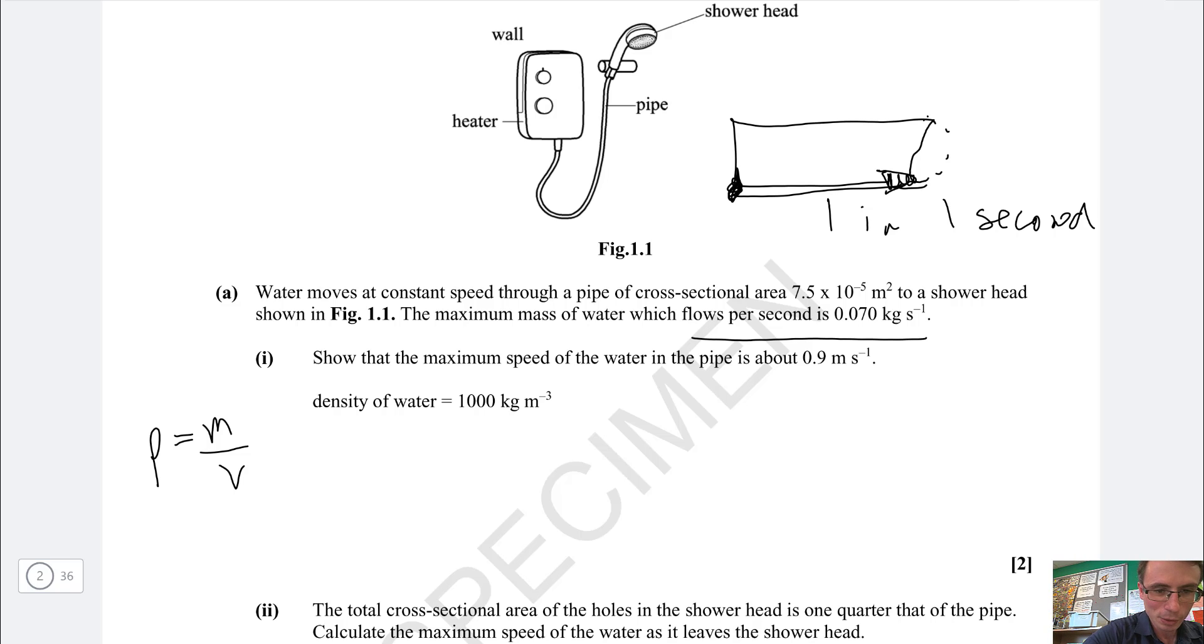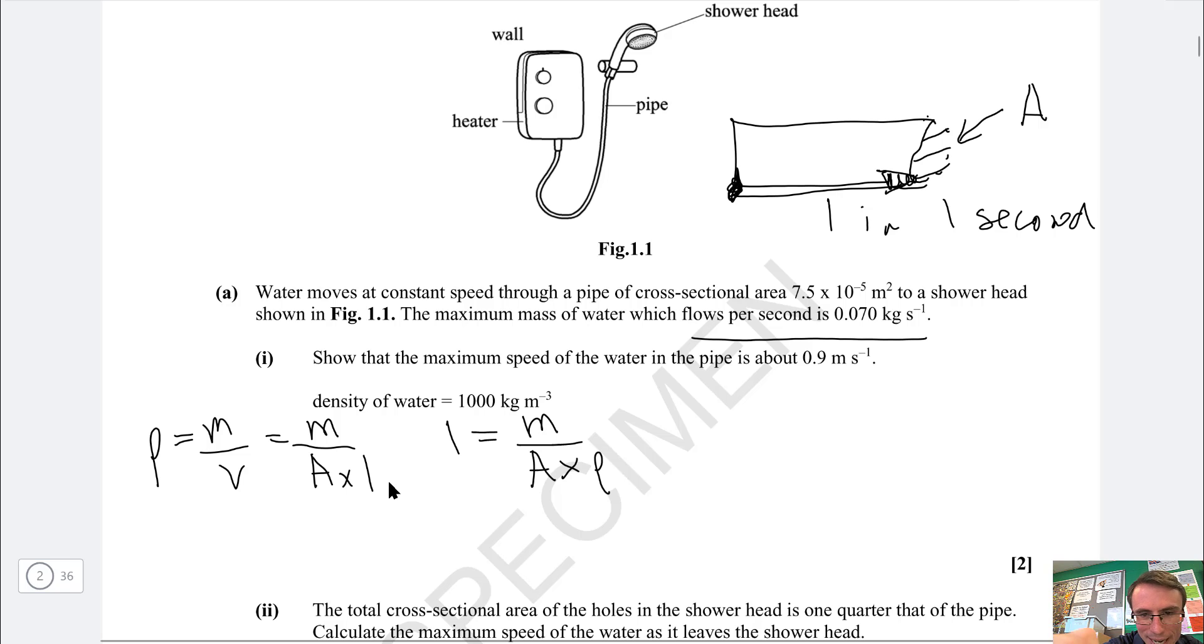Density is mass over volume and we have the mass. The volume is going to be given by the cross-sectional area a multiplied by this distance l. Because we're looking for the speed in one second this is actually going to be the length because speed is just meters per second. Let's rearrange for l. l is going to be m divided by a multiplied by the density.